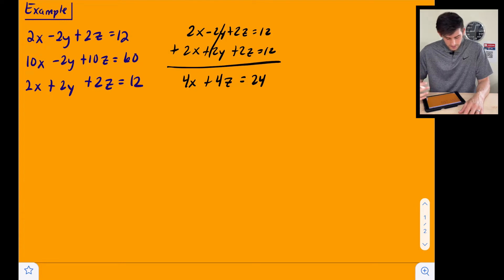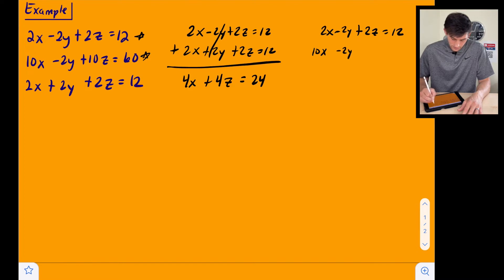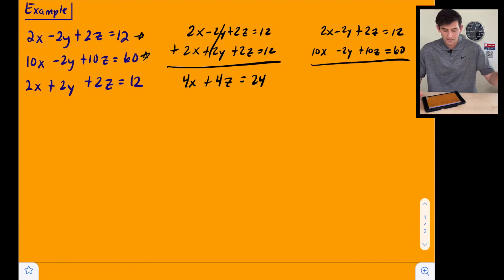So now that was my top equation and my bottom equations. Now let's use these two, the top two equations, and let's try and write a second equation where we can eliminate y. So we have 2x minus 2y plus 2z equals 12. And we have 10x minus 2y plus 10z is equal to 60. And now what I see here is I have two negative 2y's. So if we subtract these equations, my y variables will eliminate. So we have 2x minus 10x would be negative 8x, 2z minus 10z, negative 8z, and 12 minus 60 would be a negative 48.